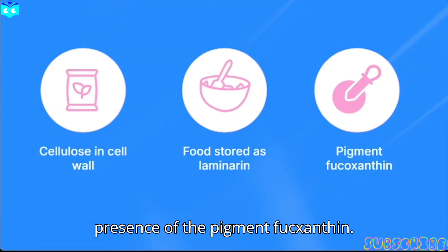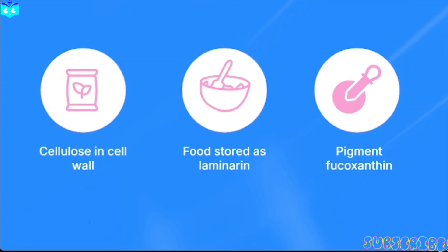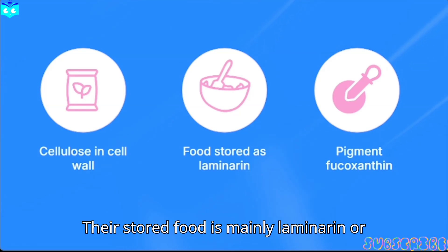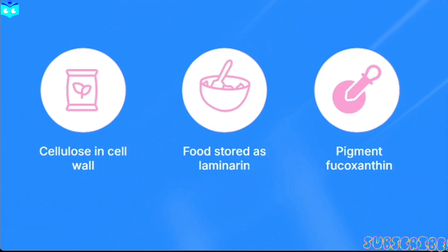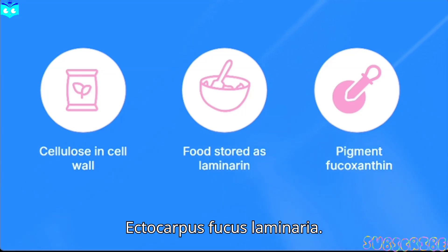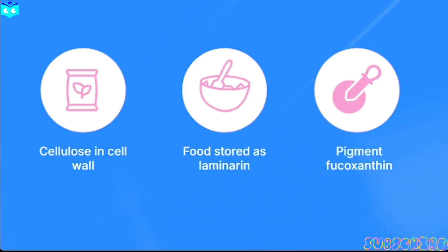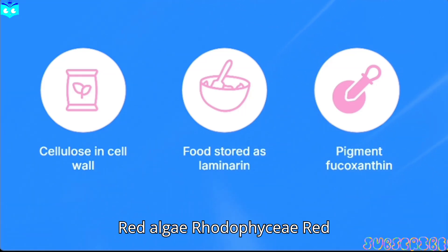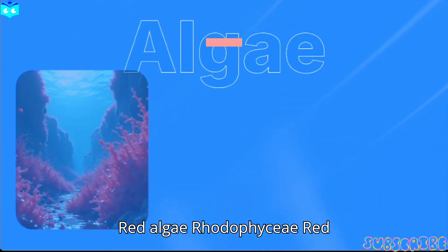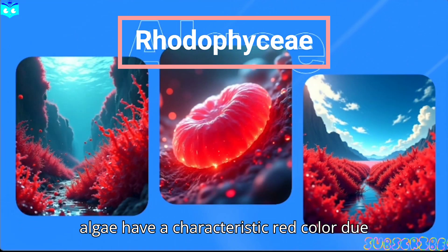Brown algae (Phaeophyceae): mostly found in marine environments, these algae appear brown due to the presence of the pigment fucoxanthin. Their stored food is mainly laminarin or mannitol. Examples include Ectocarpus, Fucus, and Laminaria.